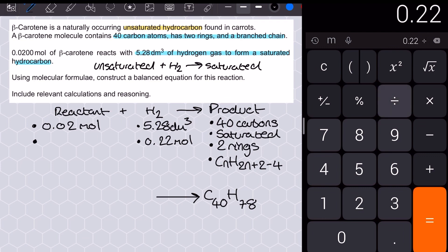Now if I look at the ratio here between these two mole values, that allows me to determine that in the balanced reaction equation, there's a 1 to 11 ratio between the beta carotene and the hydrogen.